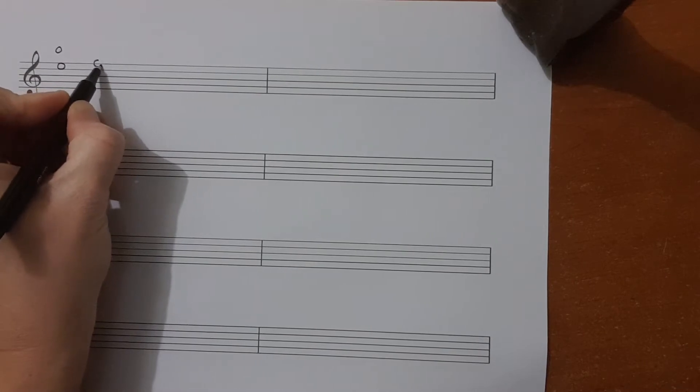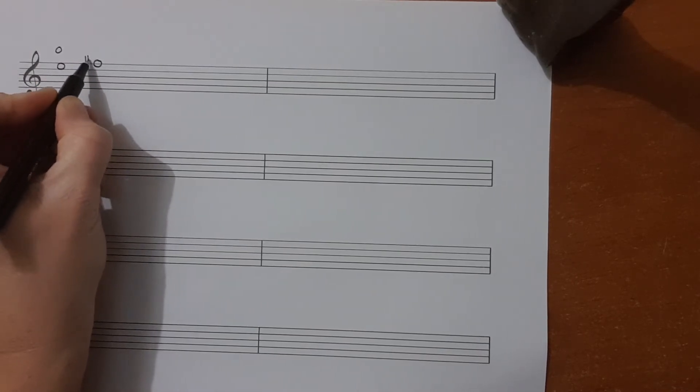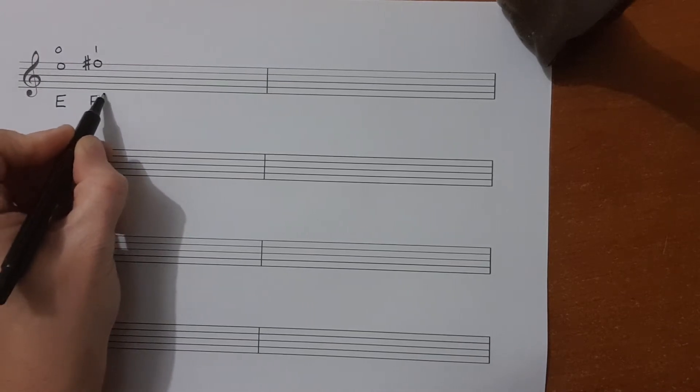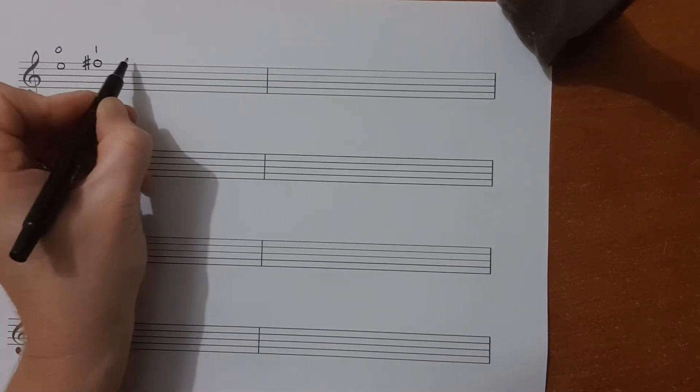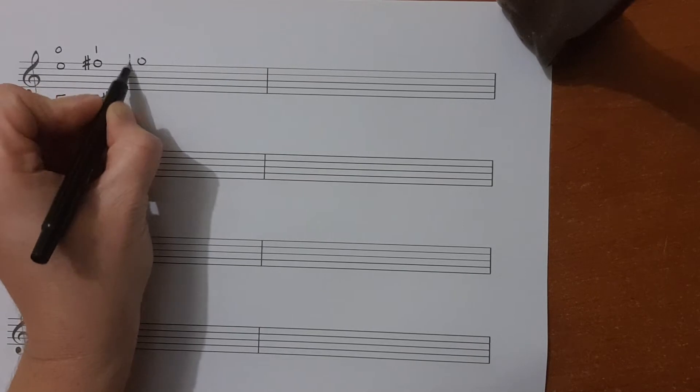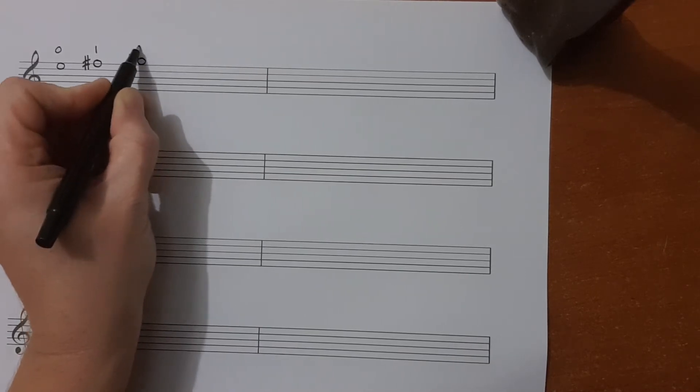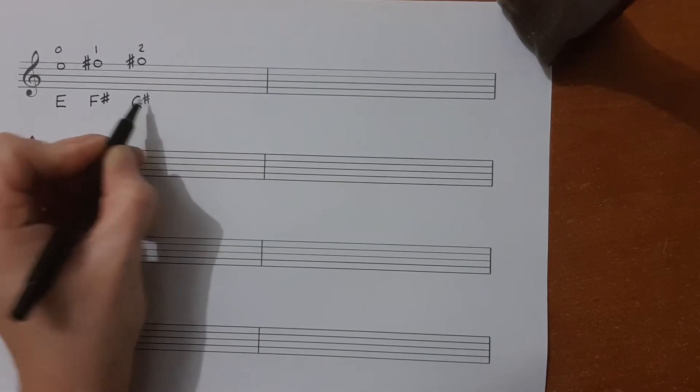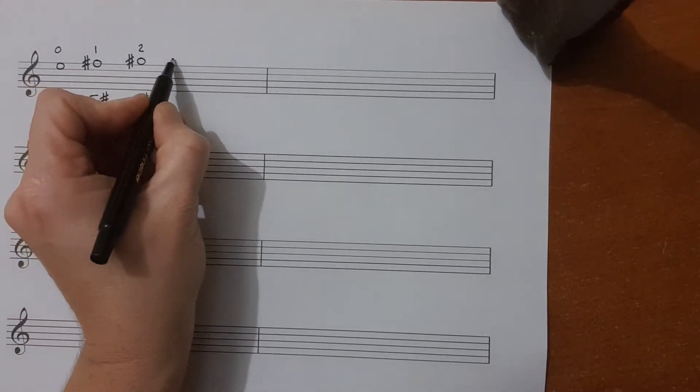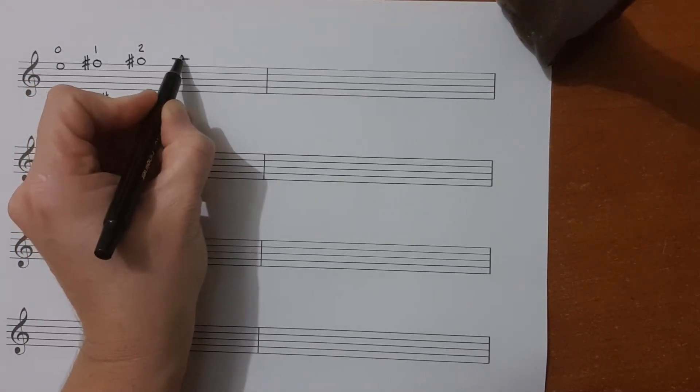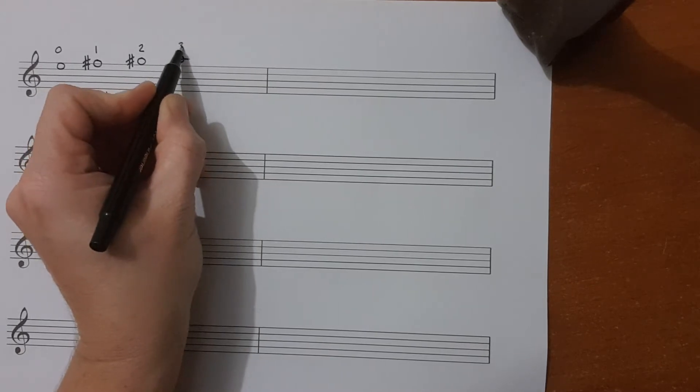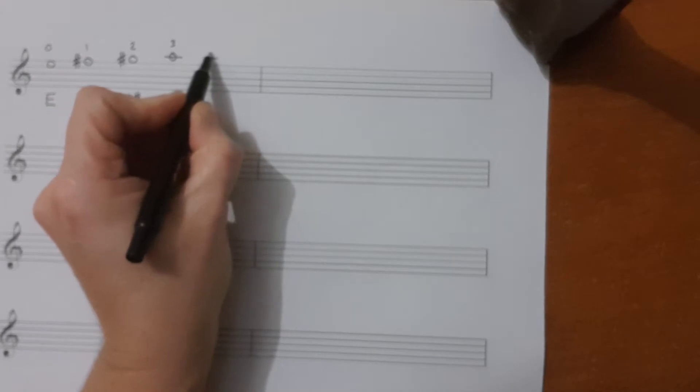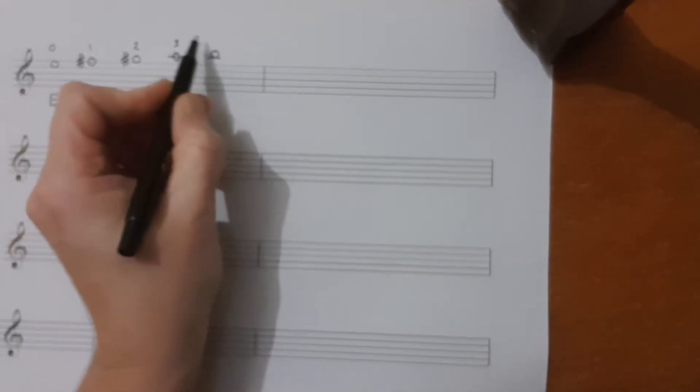Our first finger plays the note F sharp. Second finger plays the note G sharp. Third finger we need to add a ledger line. Nice and straight. That's the note A. And fourth finger. Keep your ledger line and the note goes just above.